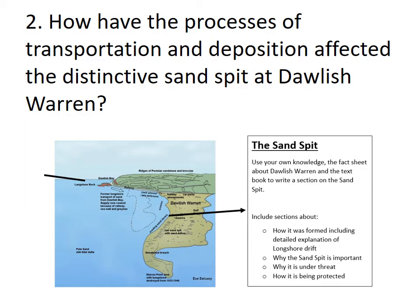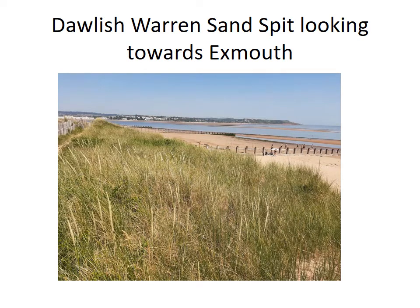The second question you need to answer is: how have the processes of transportation and deposition affected the distinctive sand spit at Dawlish Warren? Basically, the main beach at Dawlish Warren is a sand spit — a big collection of sand at the mouth of the River Exe — and it's formed by Longshore Drift.